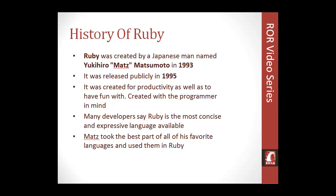Many developers say that Ruby is one of the most expressive and concise programming languages. Matz had a different approach when he created Ruby than most programming language developers. It was created for productivity and simplicity, with the programmer in mind — created for programmers by programmers. He eliminated a lot of the tedious work you have to do when building a program.